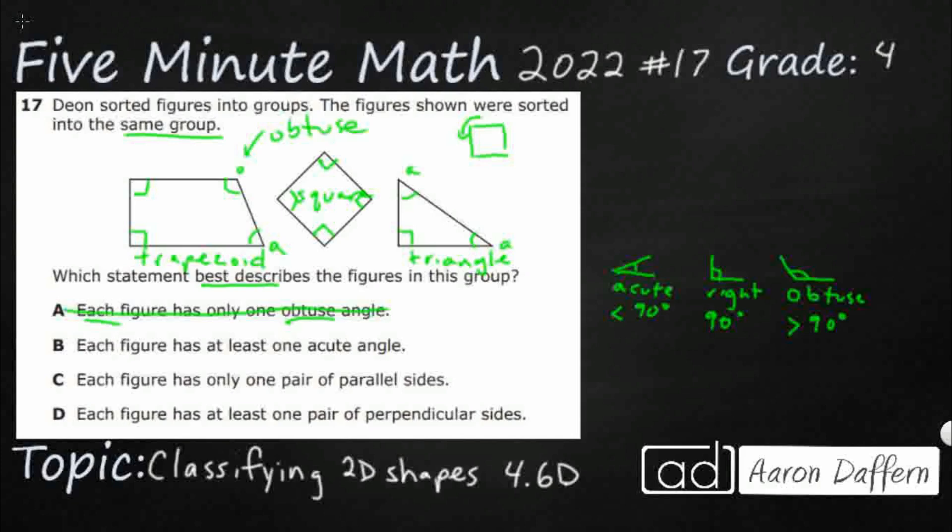B. Each figure has at least one acute angle. I've just labeled all of the angles. So I've got an acute angle here and two acute angles here. But take a look at my square. Squares by definition do not have any obtuse or acute angles. It's just four right angles. So two figures have at least one acute angle, but not all three.